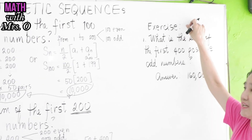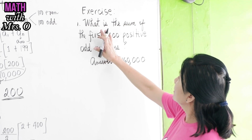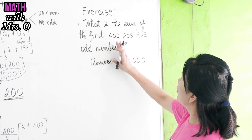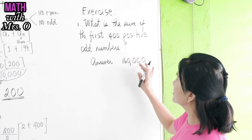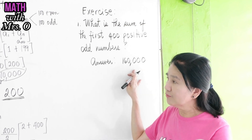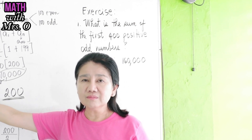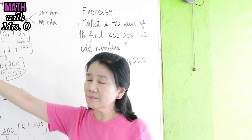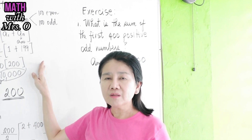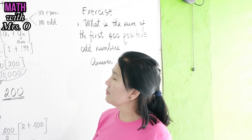I've given you here an exercise for you to solve: what is the sum of the first 400 positive odd numbers? The correct answer is 160,000. It's up to you to choose whether you will use the logical pairing method or use the formula for the sum of the N terms of an arithmetic sequence.